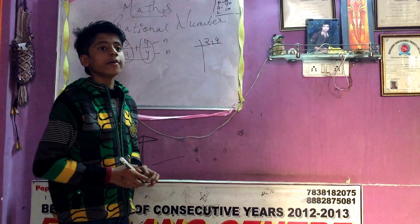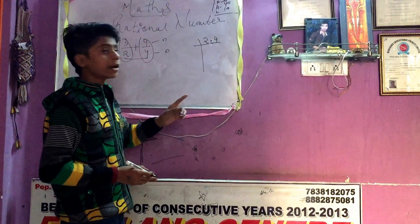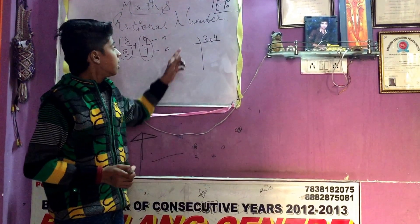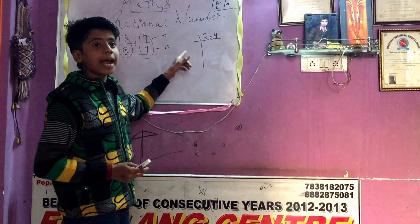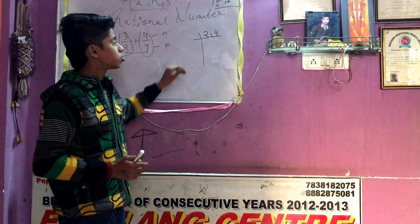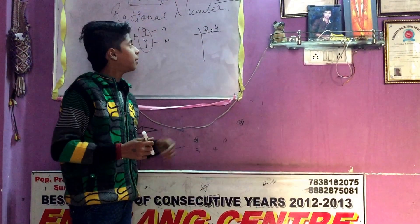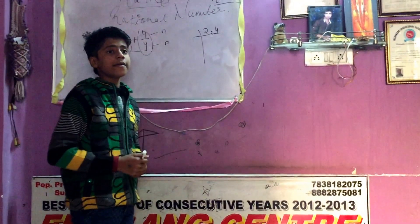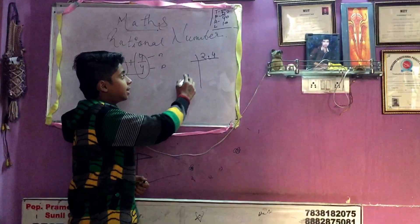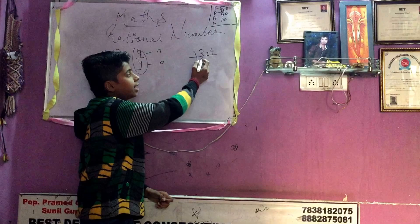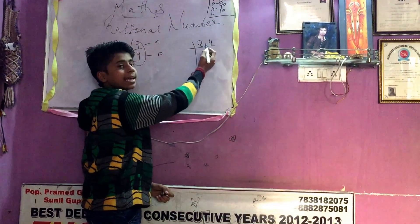You should also know your multiplication tables — not only tables but also division and multiplication. If you know your tables then you can solve it very easily. You can see these are even numbers.